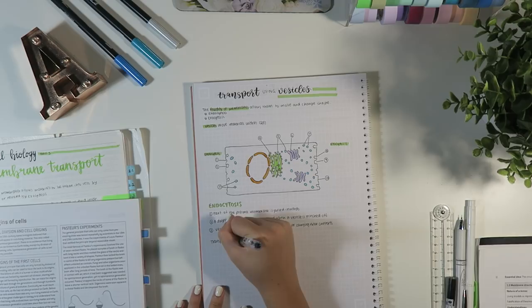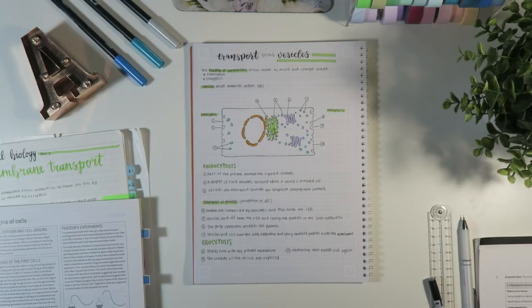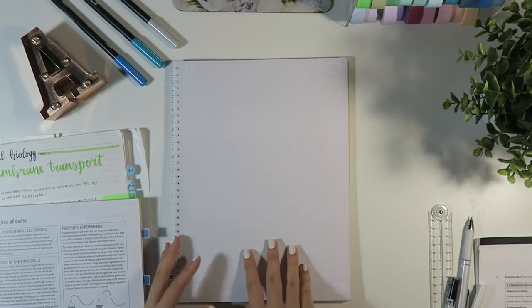For this page I tried something a little different. So I drew the diagram really big at the top and then labeled each part of it with numbers, and then below that I wrote each step of the process in a lot more detail. And that's just so the writing wasn't all squished up next to the diagram and it was more clear and concise.